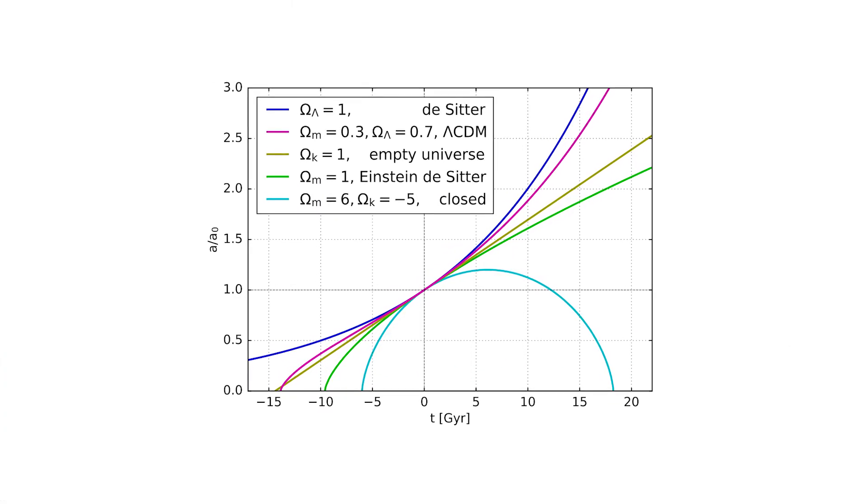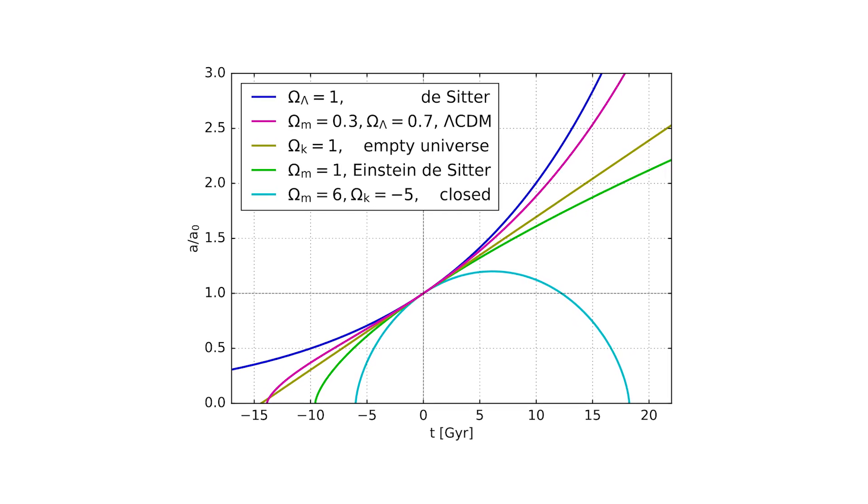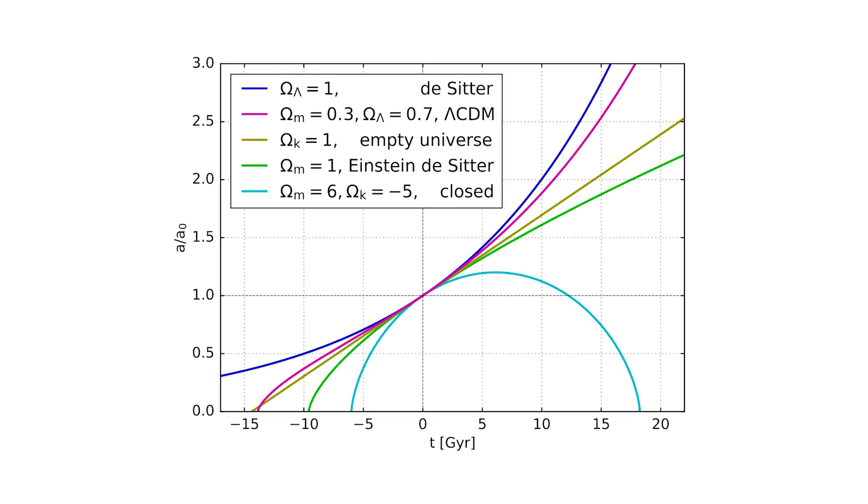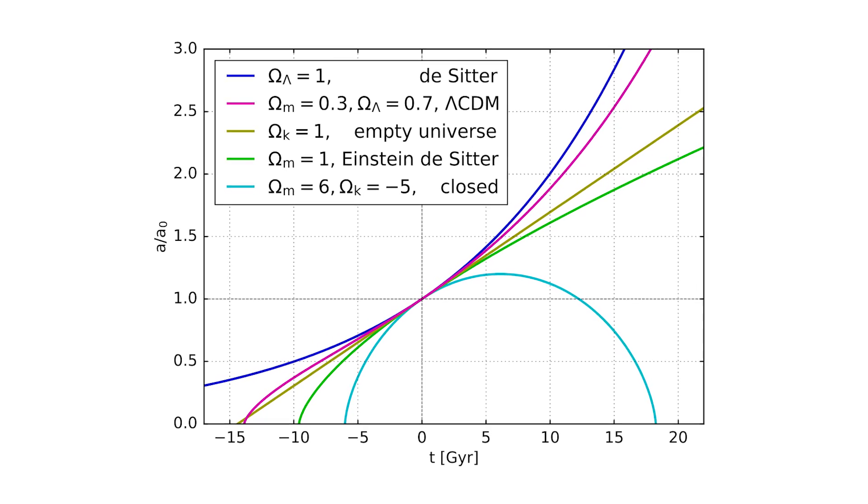So, an Omega equals 1 universe is called flat. Omega is very difficult to determine, but its present value lies somewhere between 0.1-2.